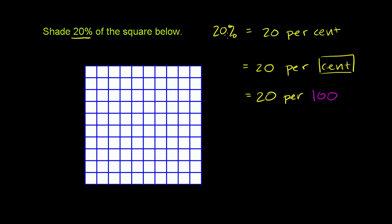20 per cent means if we want to shade 20%, that means we want to shade, if you break up the square into 100 pieces, we want to shade 20 of them. 20 per hundred.